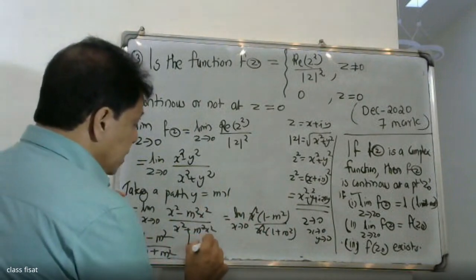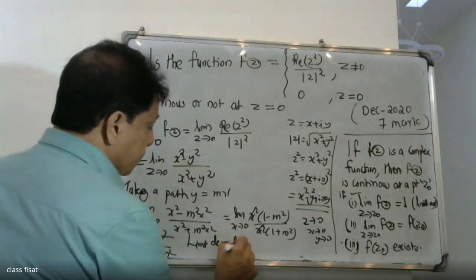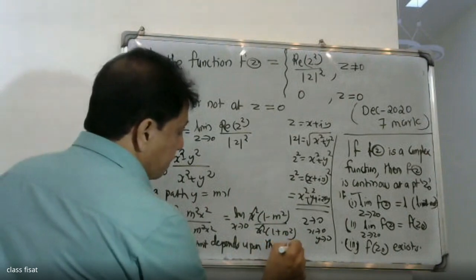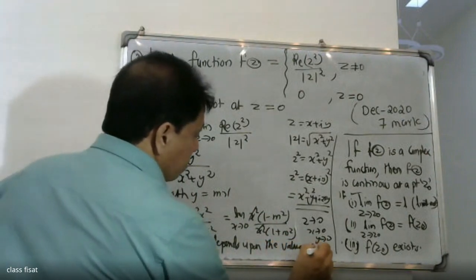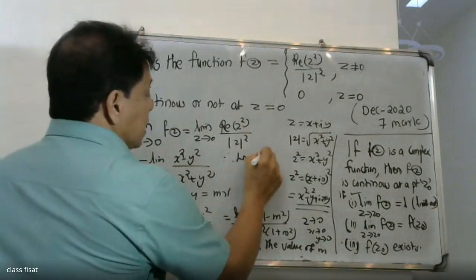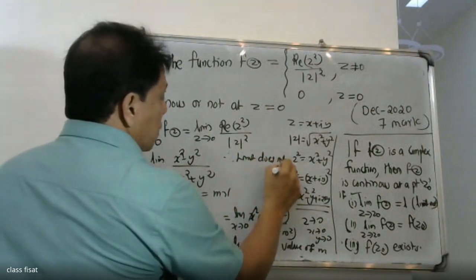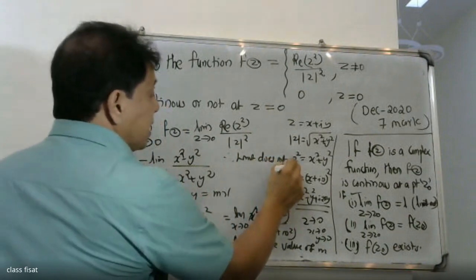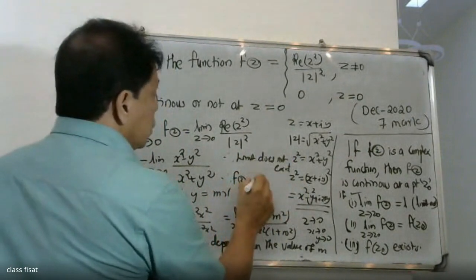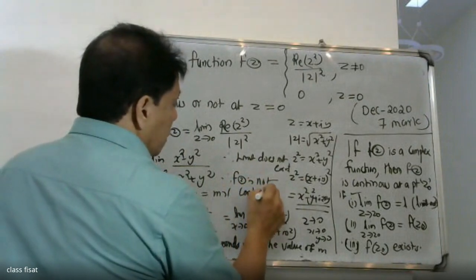The limit depends upon the value of m. Since the limit depends on the chosen path — that is, on the value of m — the limit is not unique, and therefore the limit does not exist.